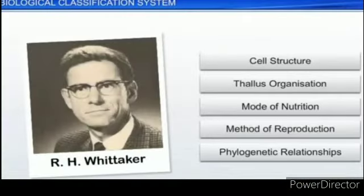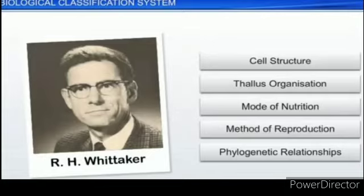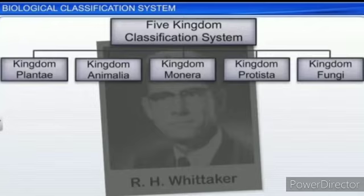In Part 1, we discussed biological classification based on cell structure, thallus organization, mode of nutrition, reproduction, and phylogenetic relationship. These are all the criteria R.H. Whittaker proposed for the five kingdom classification.